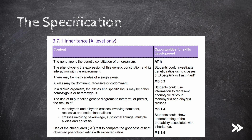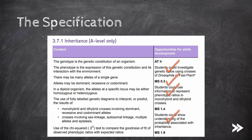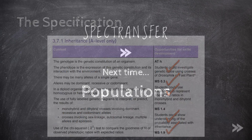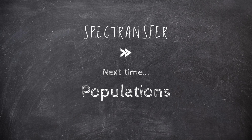Great, that would be this part of the specification covered. We have covered how the genotype is the genetic constitution of an organism and how the phenotype is the expression of this genetic constitution and its interaction with the environment. We have covered alleles and how they may be dominant, recessive or codominant; homozygous and heterozygous in diploid organisms; monohybrid and dihybrid crosses; sex linkage; autosomal linkage; multiple alleles; epistasis; and the chi-squared test to compare goodness of fit between observed and expected phenotypic ratios. That's it for now guys, thanks for watching — please subscribe and comment. Next time we will be covering populations.